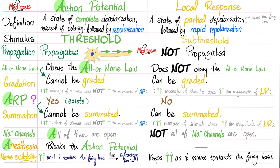Summation means when you increase the number of stimuli you give — stimulus after stimulus — this will increase the magnitude of the local response. But summation will not happen in action potential because there is an absolute refractory period; you have to wait. During the action potential, all of your sodium channels are open. But in a local response, not all of them are open.